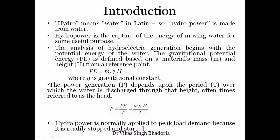The analysis of hydroelectric generation begins with the potential energy of water, defined based on the mass and height from a reference point: PE = MGH, where G is the gravitational constant. Power generation also depends on the time period — the period during which water is discharged through that height, known as the head. So power = MGH / T.